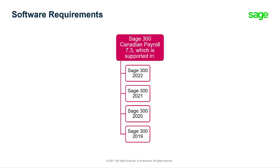To use this product, you must have SAGE 300 Canadian Payroll 7.3, which is supported in SAGE 300 2022, 2021, 2020, and 2019.